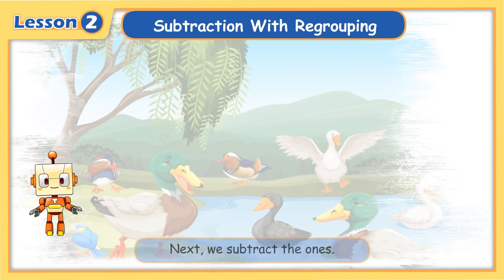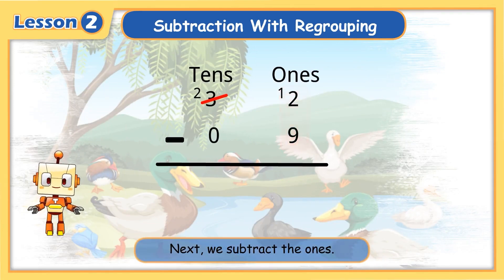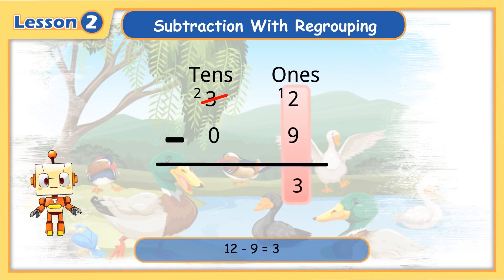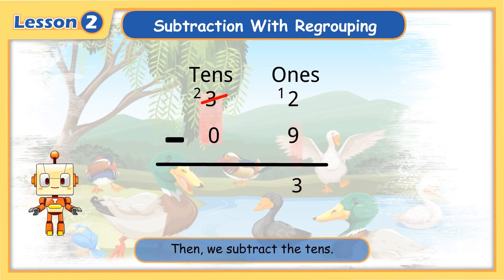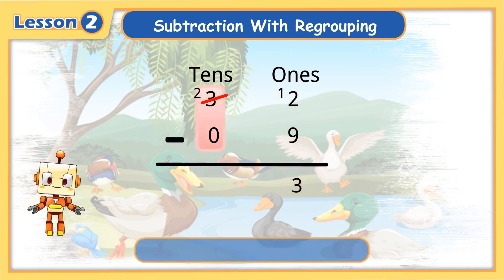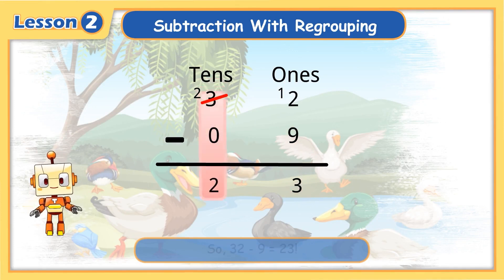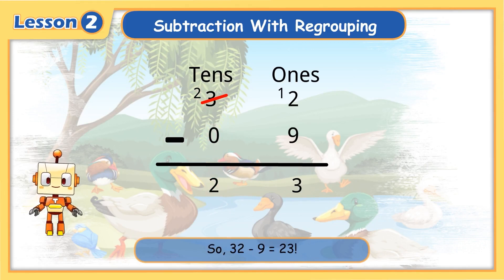Next, we subtract the ones. Twelve minus nine equals three. Then we subtract the tens. Two minus zero equals two. So, thirty-two minus nine equals twenty-three.